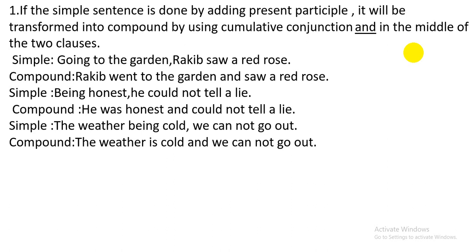Next simple sentence: 'The weather being cold, we cannot go out.' Here you can see that the subject is given in the first clause, so we use the be-verb 'is' in place of 'being'. Then we use 'and' in the middle of the two clauses. The compound sentence is: 'The weather is cold and we cannot go out.'